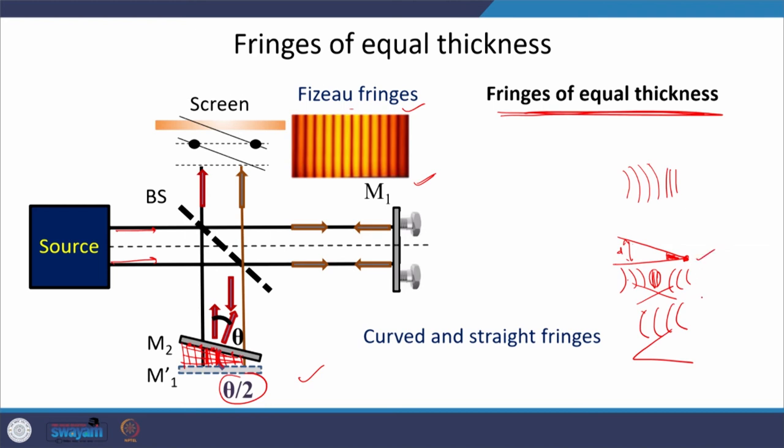By tilting the mirrors in different ways, we can generate different types of fringes — straight, curved, or other patterns — depending on the mirror orientation.